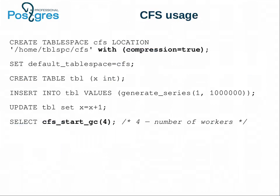For now, compression can be applied at the tablespace level only. If you want to use CFS, just create a tablespace with compression enabled and it works — you operate the table like before. There is one additional level of garbage collection to tune, as shown on the previous slide. It's also possible to initiate GC manually: if there are no background workers, you can just call CFS GC, just like calling VACUUM instead of autovacuum.